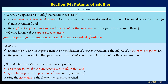Section 54, Patents of Addition, Subsection 1: where an application is made for a patent in respect of any improvement or modification of the invention — termed as the main invention — and the applicant applies or has applied for a patent for that invention, or is the patentee in respect of the patent, the controller may, if the applicant requests, grant the patent for the improvement or modification as a patent of addition.